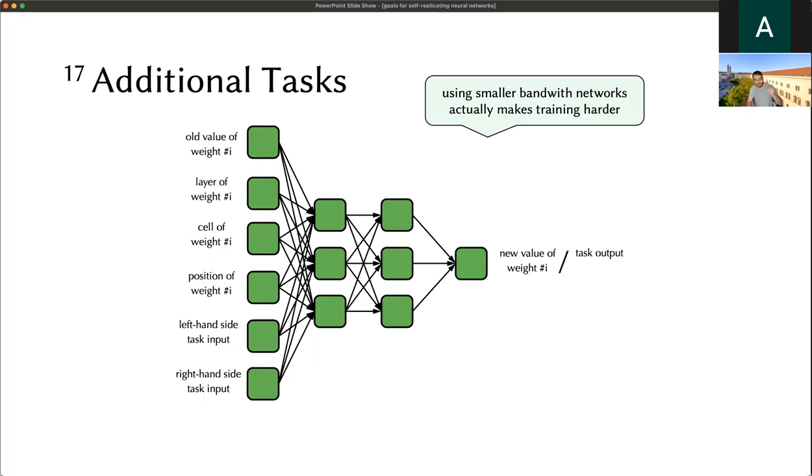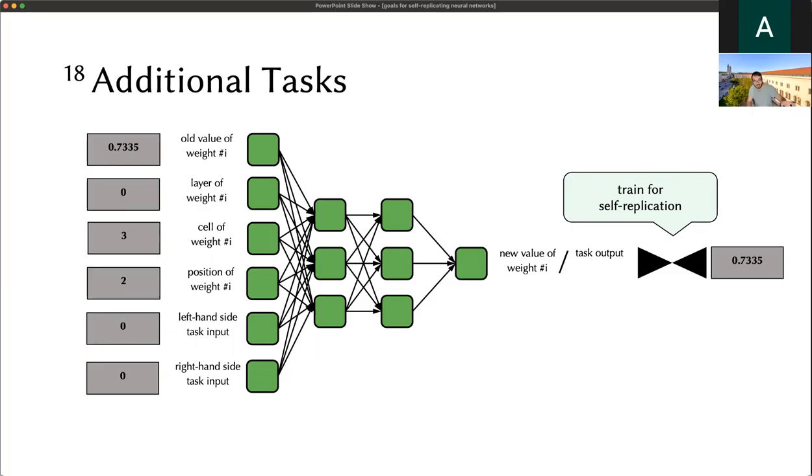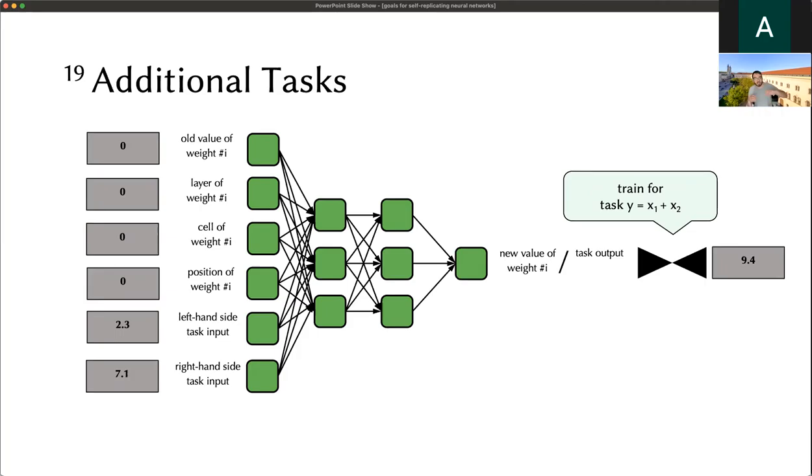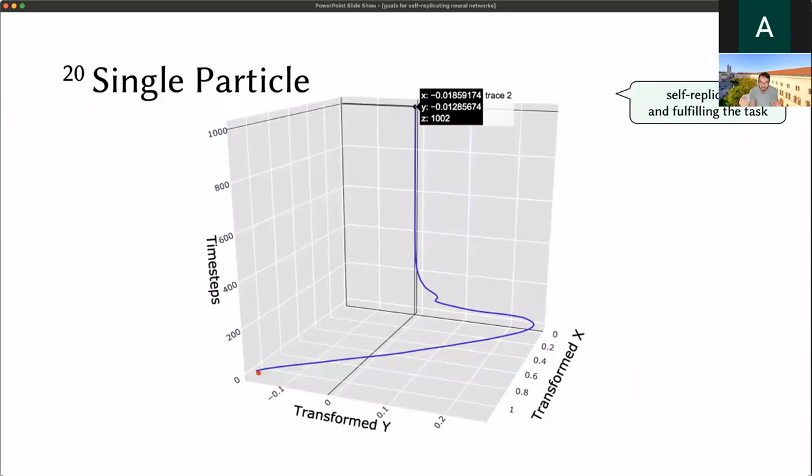With a setup like this, we have two ways to use it. First, we can input the value of another network and some position data as we did before, and then we leave the task inputs at zero. We expect the network to produce a new value for the weight, and we can train for self-replication just as before. Then we have another mode where we leave all the weight and positional inputs at zero and just input two task inputs. We expect the network to return the output of the task, and we can train for this as well. This plot shows it works. We have some learning phases. The network makes a curve but then ends up being stable where it's both self-replicating and fulfilling the task.